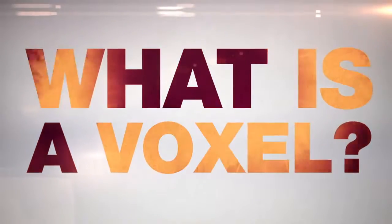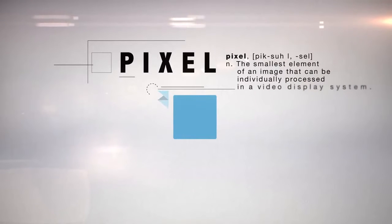What is a voxel? Let's start with the pixel. Every 2D image your eyes see is made up of tiny pixels, different colors working together to create new colors, textures, and patterns.